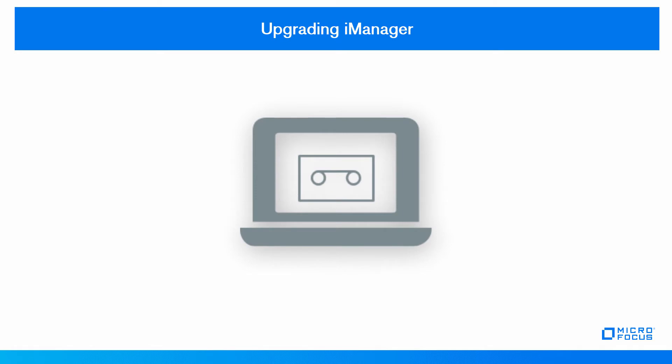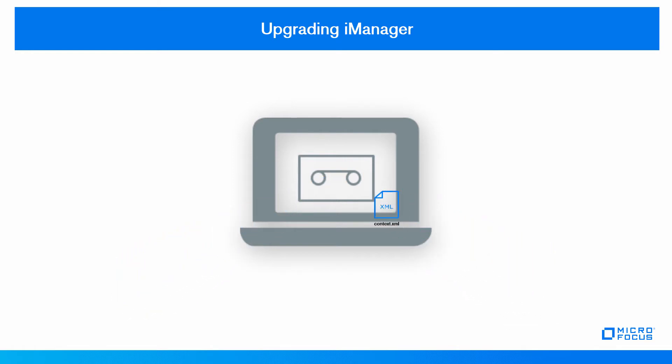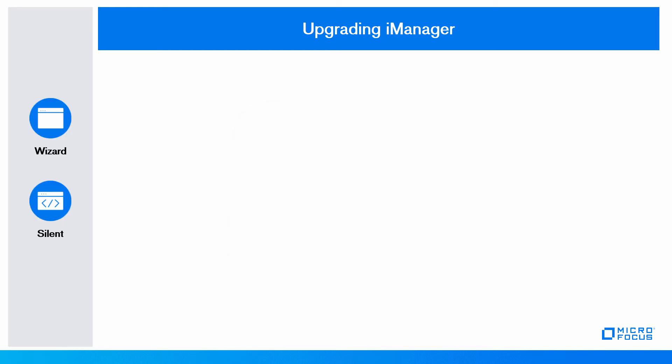Upgrading iManager. Before upgrading iManager, backup the server.xml and context.xml files if you have modified them, as the upgrade replaces all the configuration files. The upgrade process uses the HTTP port and SSL port values that were configured in the previous version of iManager. The upgrade process includes these activities.